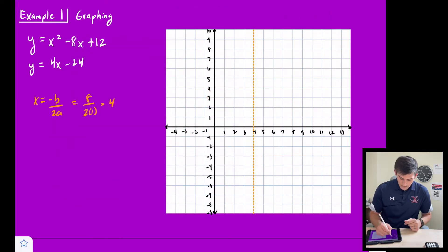Now, I know that my y-intercept would be 12. It doesn't quite fit on my graph, so let's not put that right now. But let's go ahead and find where our vertex would be. So we're going to say y equals x. Actually, let's plug in 4 for x.